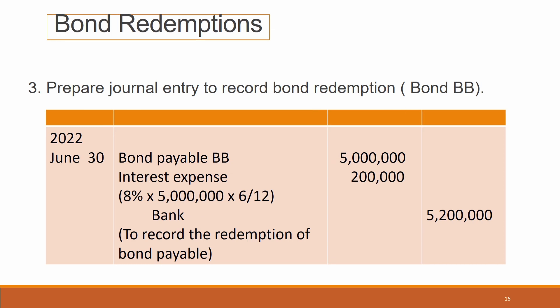The last one: prepare the journal entry for Bond BB redemption. The date of maturity for Bond BB is 30 June 2022. Journal entry: debit bond payable RM5 million; debit interest expense — calculated as 8% × RM5 million × 6/12 (January to June 2022) = RM200,000; credit bank RM5,200,000. Narration: to record the redemption of bond payable.